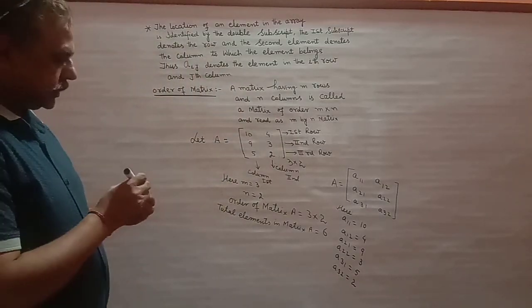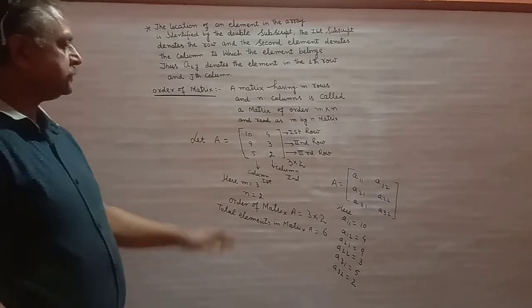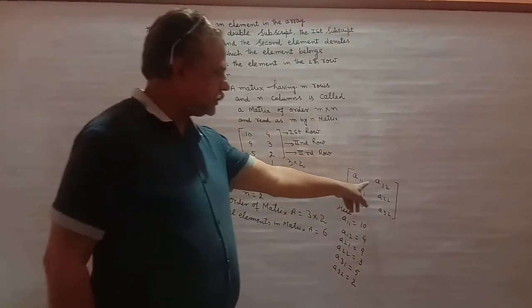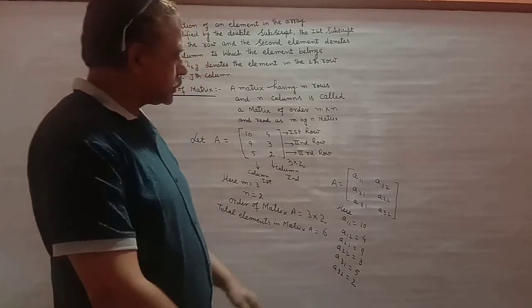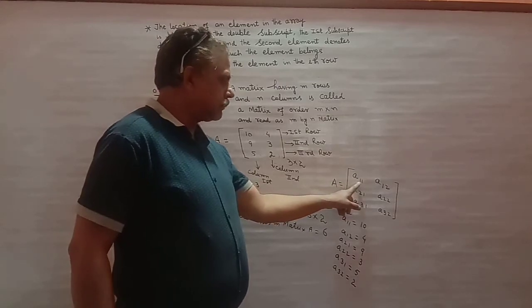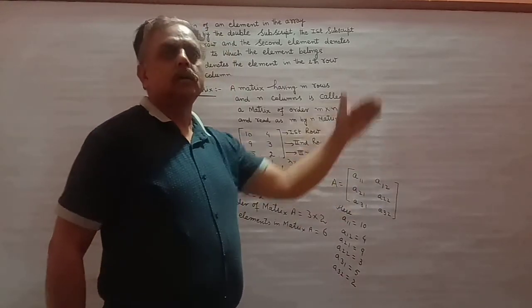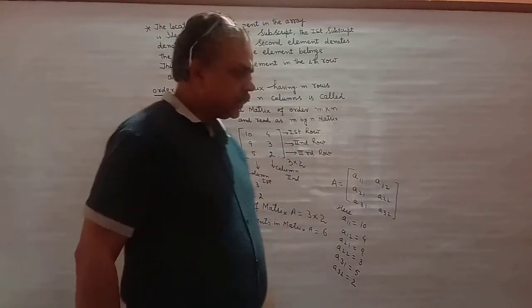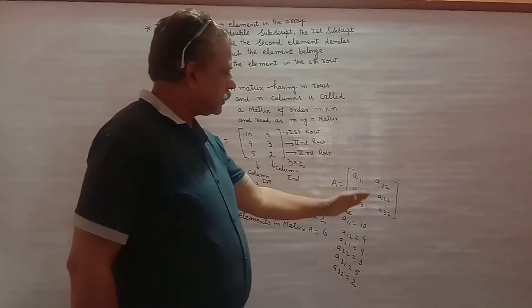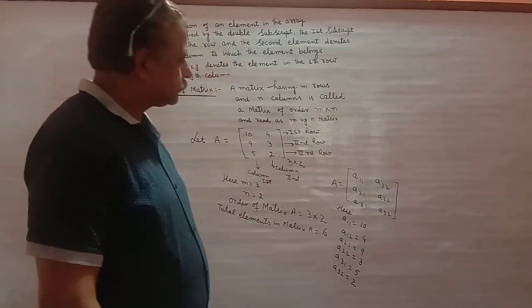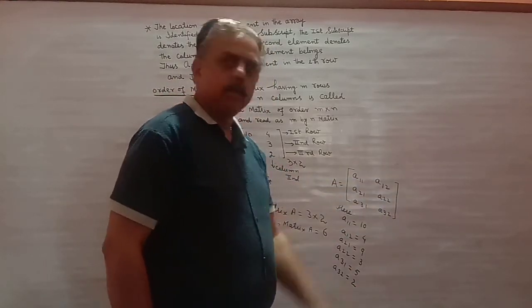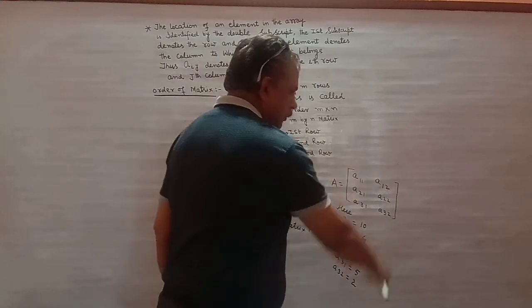एक बार फिर बता दूँ — जब हमें कोई matrix construct करनी है, तो इस generalization की मदद से कर सकते हैं। जैसे A11, A12, A13 अगर तीन column हों। A21, A22, A23 और A31, A32, A33 — तो यह third row और तीन column हो जाएंगे, तीन row और तीन column इस तरीके से।